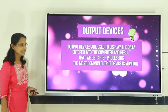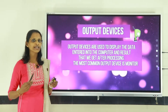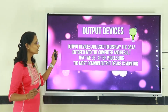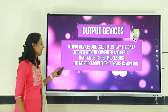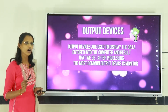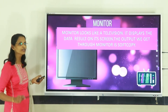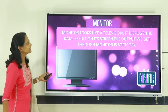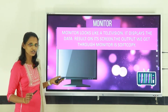The last category of devices is output devices. What is output? After processing your work, the final result displayed on the monitor is called output. Output devices are used to display the data entered into the computer, and finally the result is displayed on the screen. The most commonly used output device is the monitor. Monitor looks like a television. It displays data and results on the screen. The output we get through the monitor is a soft copy.